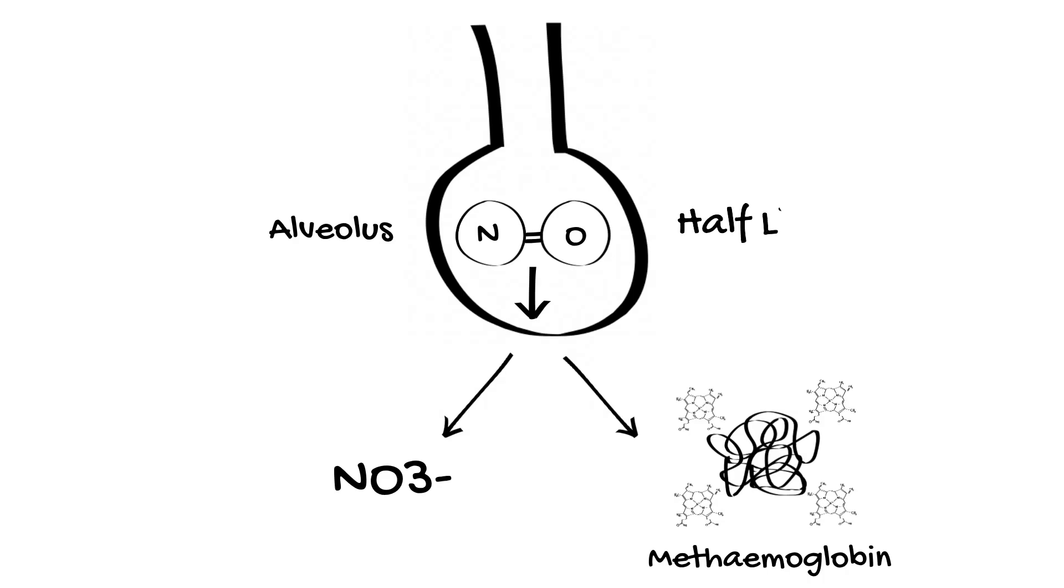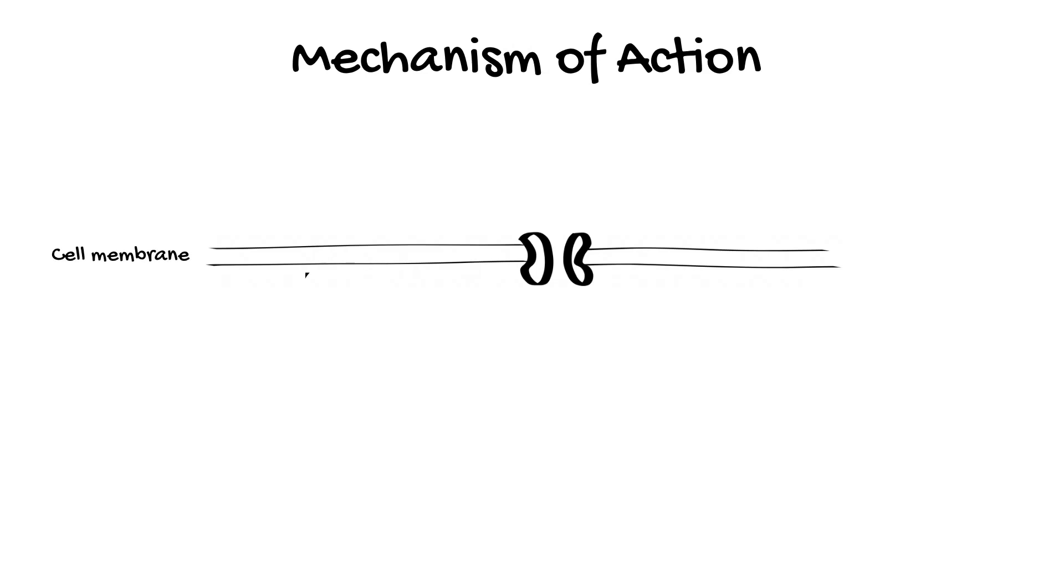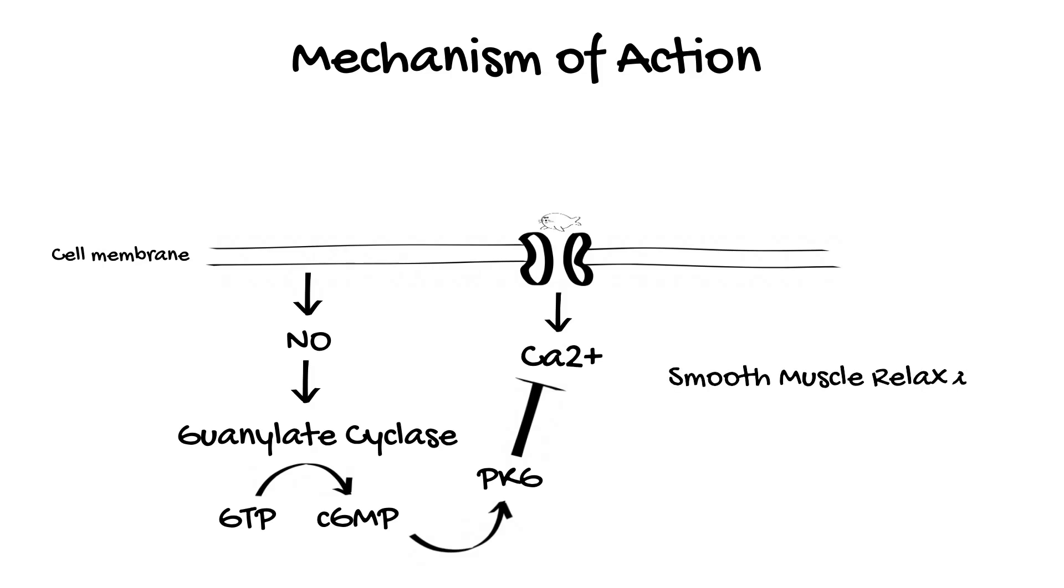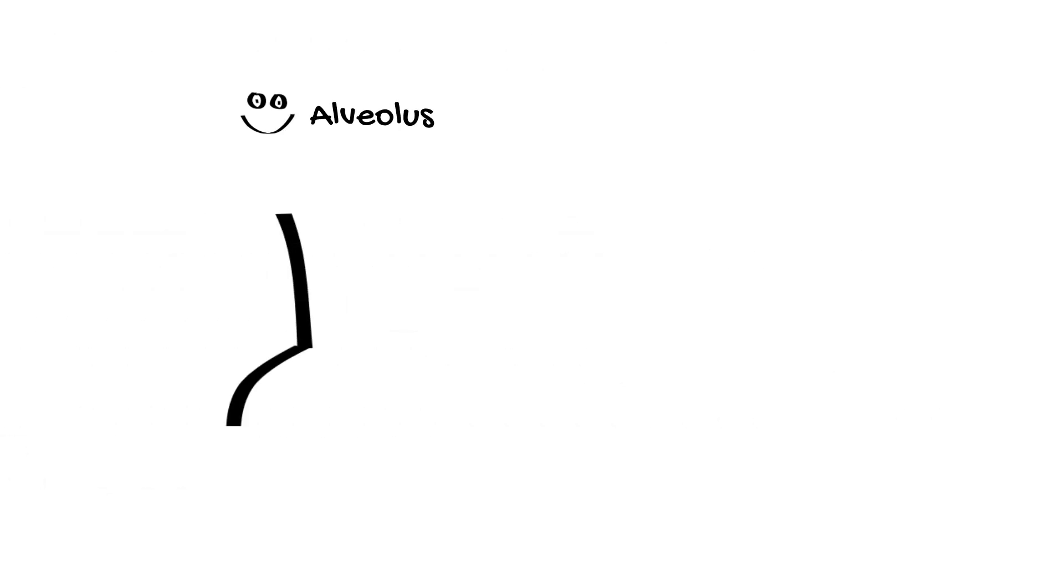In terms of mechanism of action, nitric oxide acts as a potent pulmonary vasodilator. It diffuses into the pulmonary vasculature where it increases the concentration of cyclic GMP. This reduces the concentration of intracellular calcium, resulting in smooth muscle relaxation and vasodilation of the pulmonary circulation. Because nitric oxide is delivered via the inhaled route, it is preferentially delivered to parts of the lungs that are easier to ventilate.